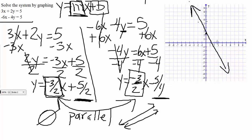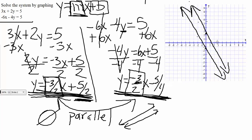For our second equation, we have a y-intercept of negative 5 fourths. If we plug that into the calculator — 5 divided by 4 — we get about 1.25. Since it's minus 5 fourths, from the origin we go down about 1.25. The slope is also negative 3 halves, so from that point we go up 3 over 2 and connect the dots. Having both lines graphed, we can visually see they are parallel lines — they will never intersect. We noticed it algebraically by comparing the slopes, and by graphing them we can visually confirm they are parallel.